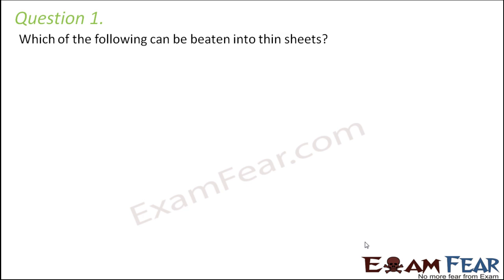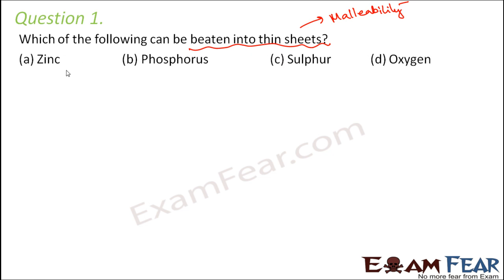Question number 1. Which of the following can be beaten into thin sheets? Now what is that property which says that an object can be beaten into thin sheets? That property is called malleability and metals are malleable. So let us see the options. Now in this option zinc is a metal, so metal is malleable.